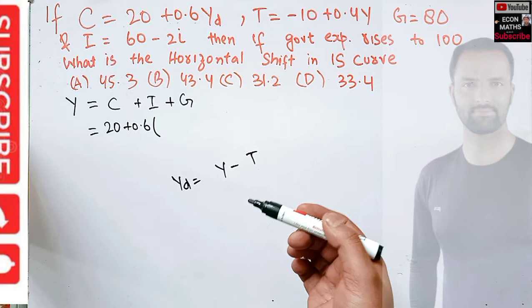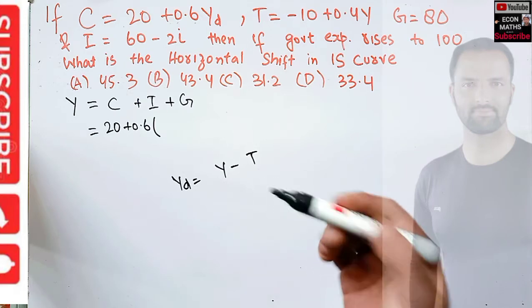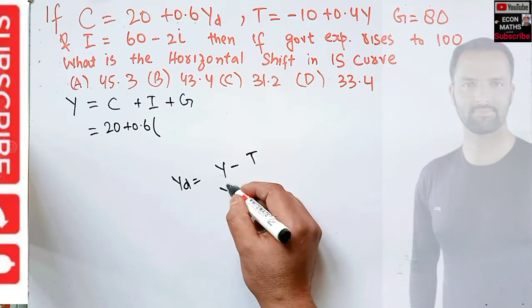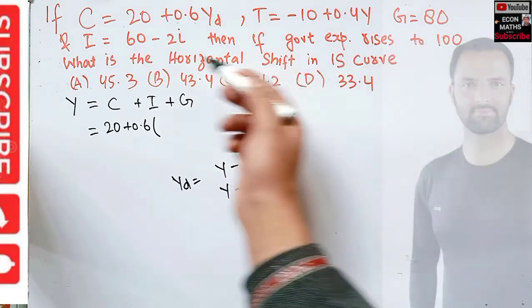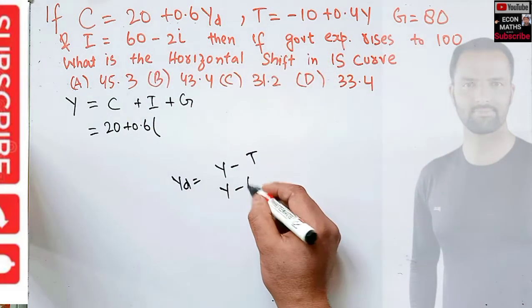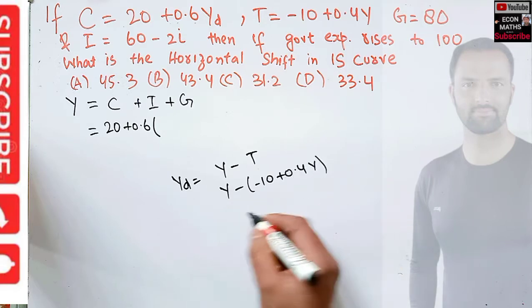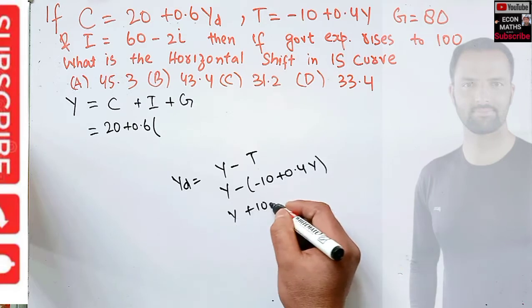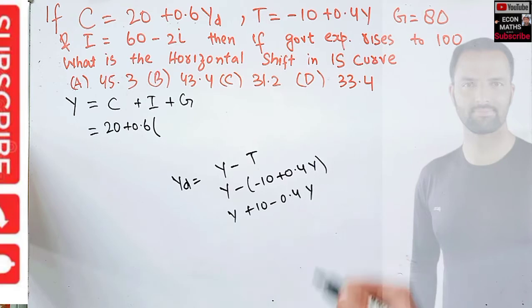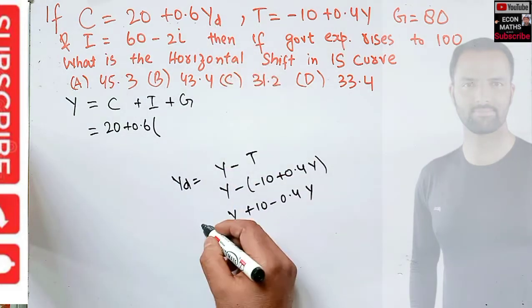Disposable income is equal to that income which is left when we pay the taxes. So we have Y minus T. The value of T is given as -10 + 0.4Y, so this is Y + 10 - 0.4Y.